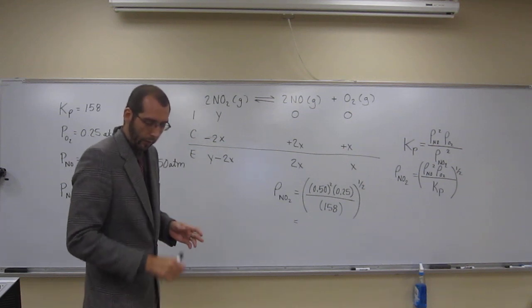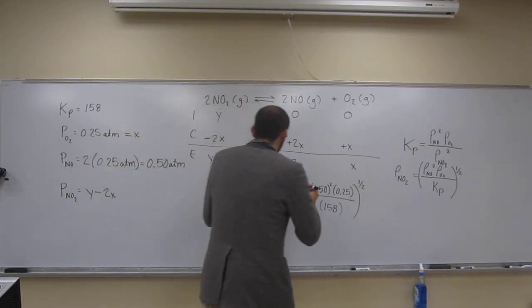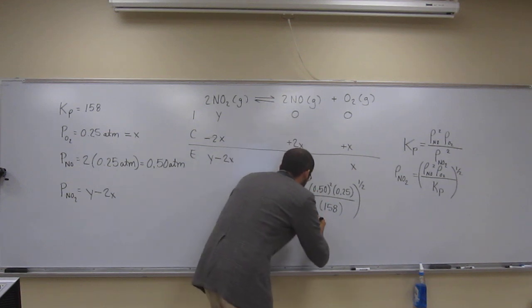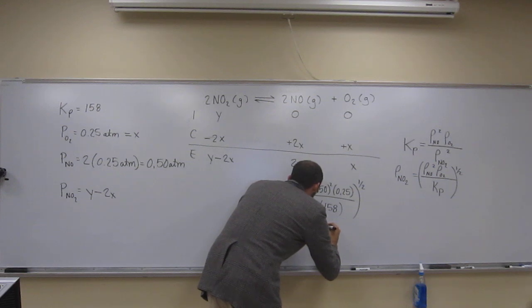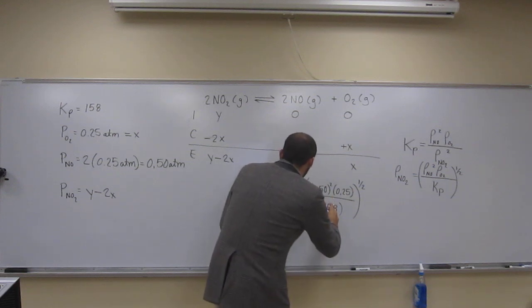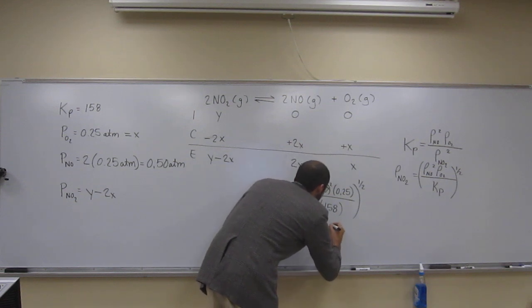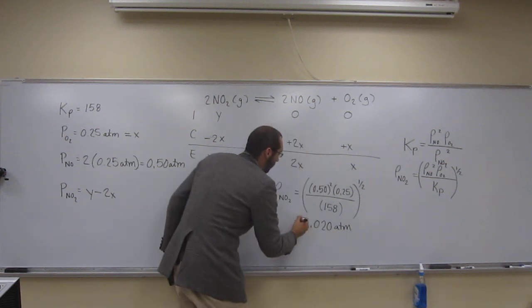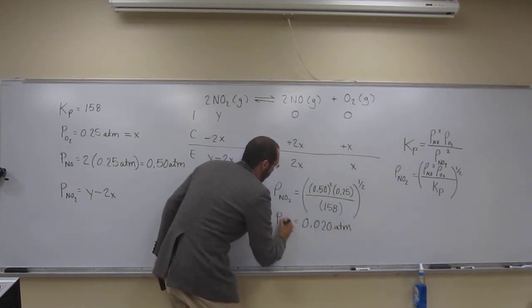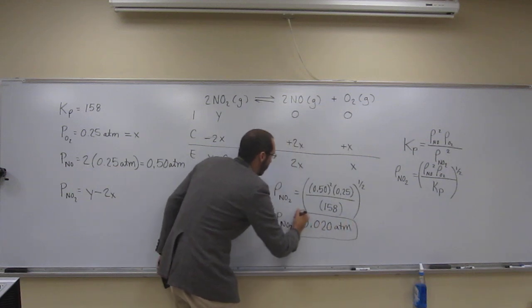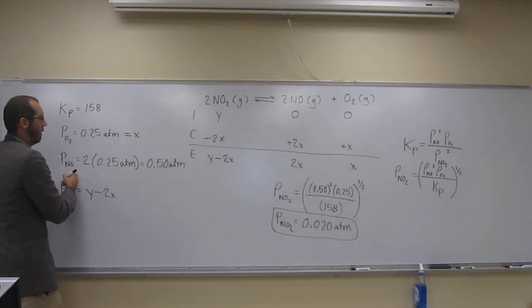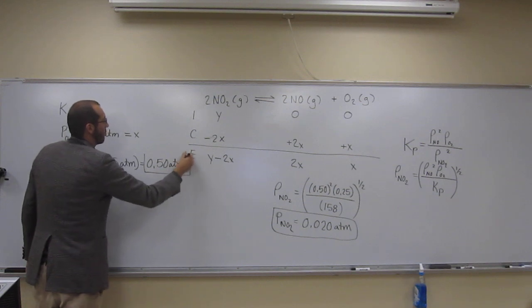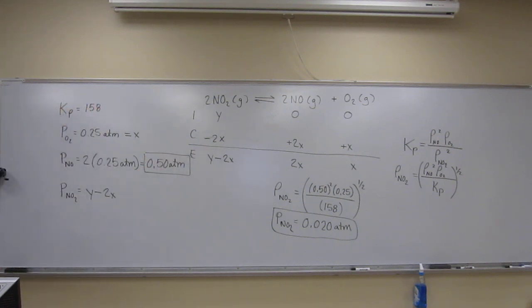So 0.5 squared times 0.25 divided by 158, and then we're going to take the square root. And that gives me 0.020. So 0.02018. So partial pressure for nitrogen dioxide, and the partial pressure for nitrogen monoxide is 0.50 atm.